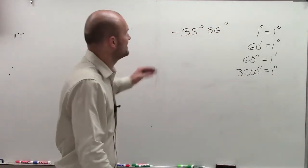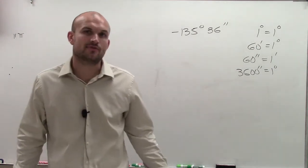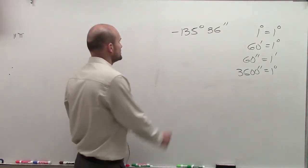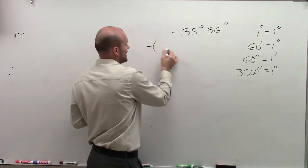So how do I find the decimal value of negative 135 degrees and 36 seconds? Well, what we can do without worrying about our negative, I'm going to factor that out right now.